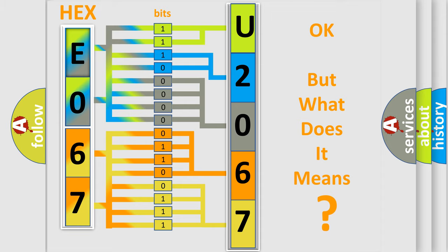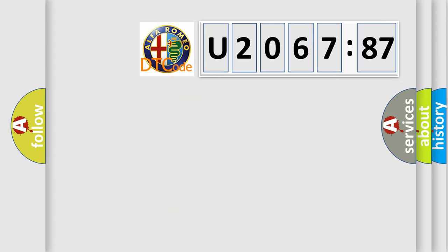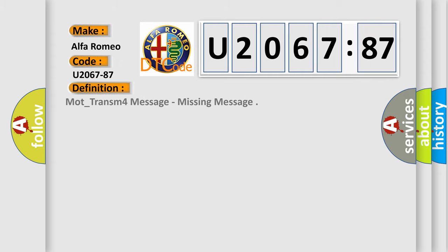We now know in what way the diagnostic tool translates the received information into a more comprehensible format. The number itself does not make sense to us if we cannot assign information about what it actually expresses. So, what does the diagnostic trouble code U206787 interpret specifically for Alfa Romeo car manufacturers?